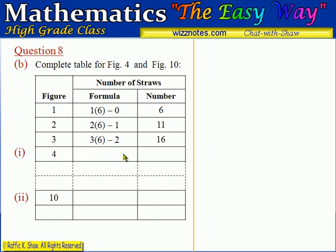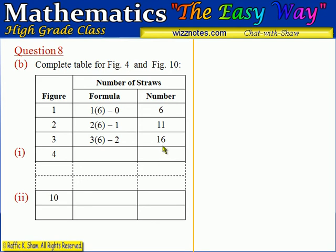Six straws are used in the first figure, then five straws are added to get the second figure — so 6 plus 5 is 11 — and then five straws are added to get the third, giving 11 plus 5 equals 16. That pattern will continue for any number of figures.